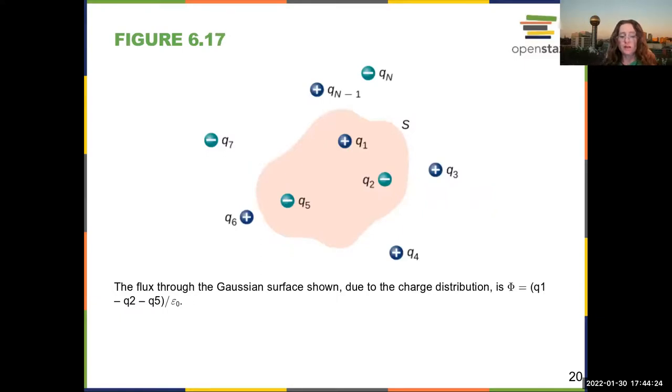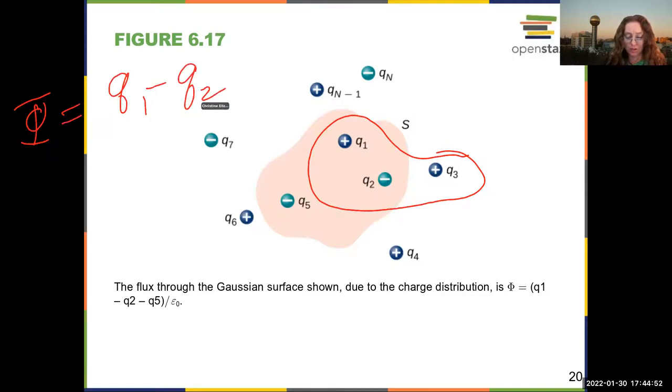So, in this case, the total enclosed charge is q1 minus q2 minus q5. So the flux is q1 minus q2 minus q5 divided by epsilon naught. I can draw another surface, this one has a flux, q1 minus the magnitude of q2 plus the magnitude of q3 divided by epsilon naught.